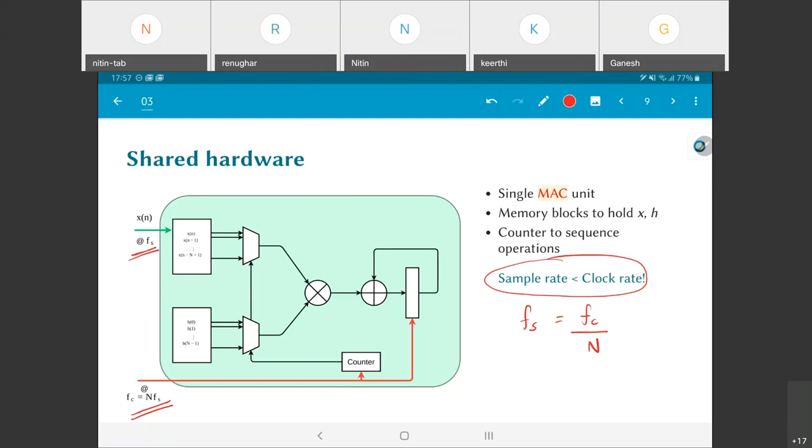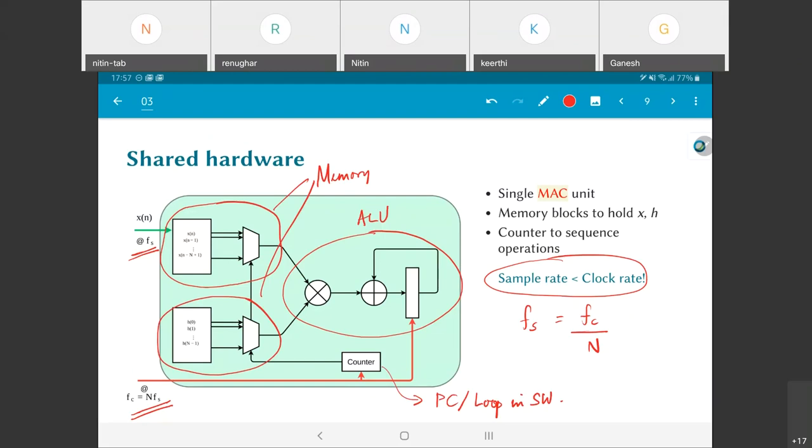In fact, if you think a little bit about the shared architecture that I have shown, it is pretty much exactly how a signal processor would be designed. I would come up with an ALU, which would basically be this portion over here, the arithmetic and logic unit that is capable of doing multiplications and so on. I would have 2 memory blocks from where I can read data, and this counter can be thought of as the program counter plus a loop in software, and I can get exactly the same implementation that I have shown over here. So thank you so much.